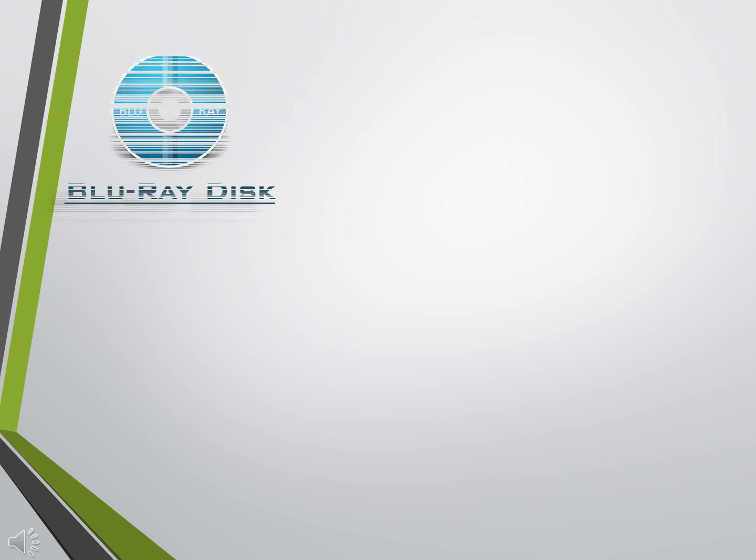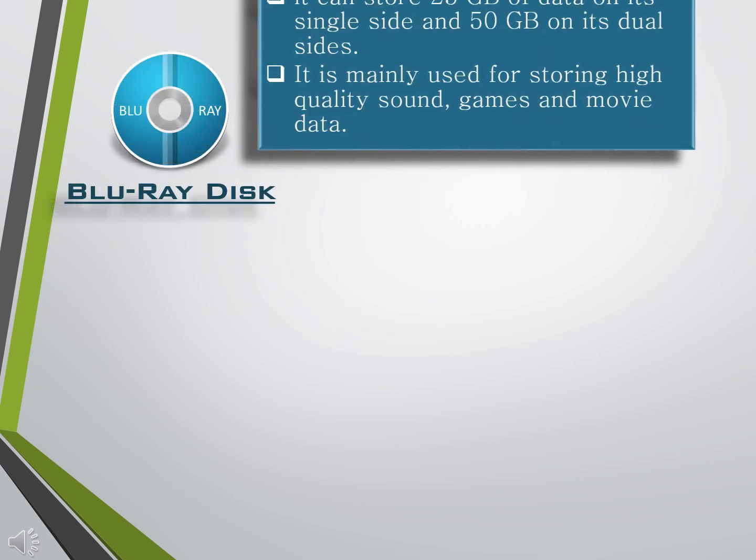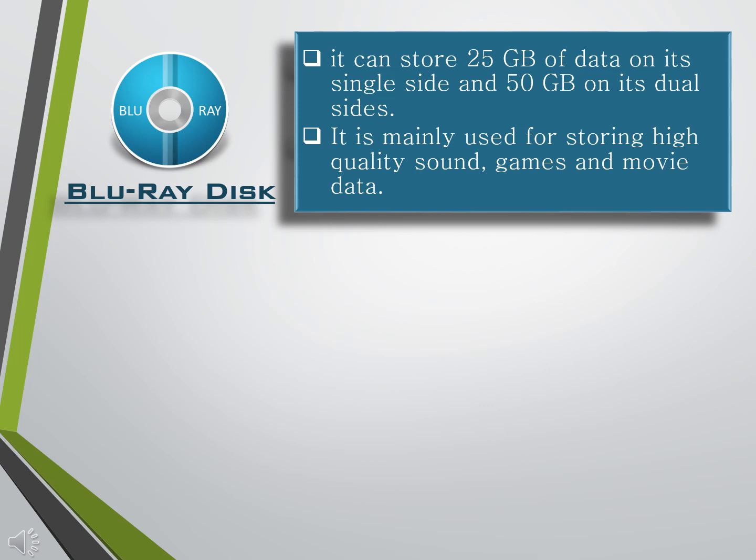Blu-ray Disk: It is a new optical disk format that can store 25 GB of data on a single side and 50 GB on its dual sides. The size of the Blu-ray disk is similar to a DVD but its storage capacity is 5 times more than that of a DVD. This disk derives its name from the blue-violet laser that is used to read and write data on it.